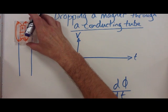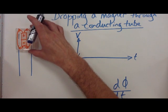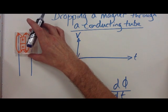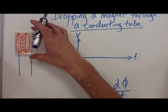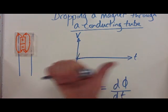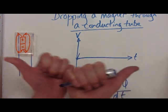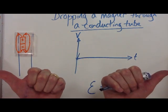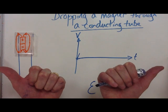It starts to move faster. As it gets to about here, not only are the field lines coming outwards — outwards away from the north — they are cutting the tube.